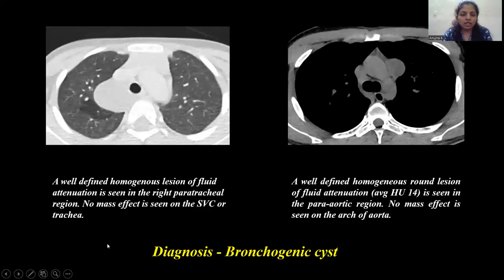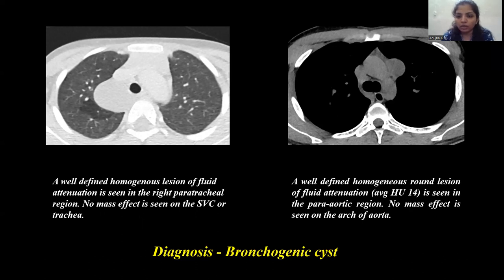This is an axial HRCT image showing a well-defined homogeneous lesion of fluid attenuation in the right paratracheal region, with no mass effect on the SVC or trachea. A similar case shows a homogeneous round lesion of fluid attenuation in the paraaortic region, with no mass effect on the arch of aorta. These cases were diagnosed as bronchogenic cysts.